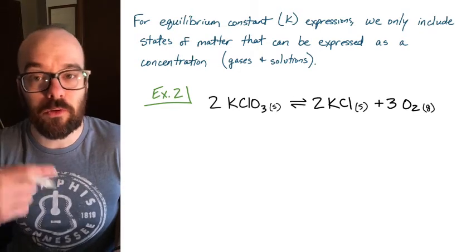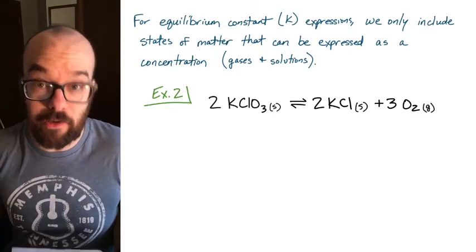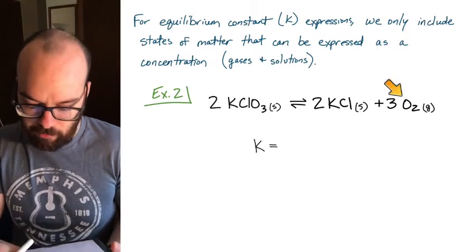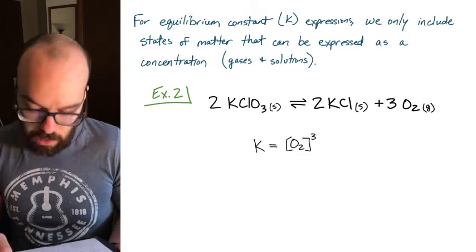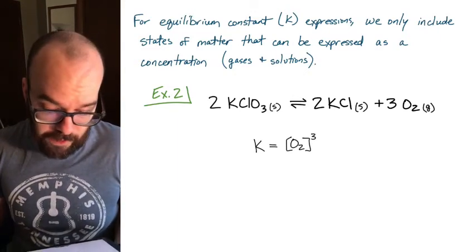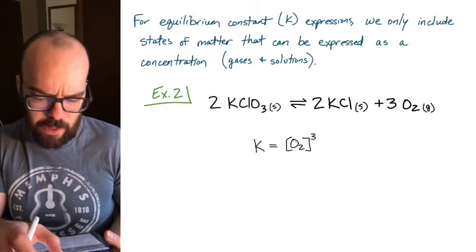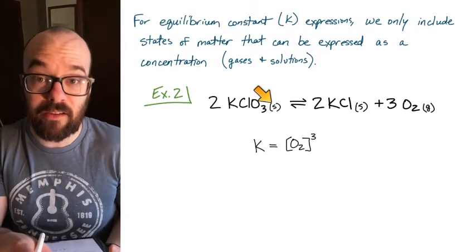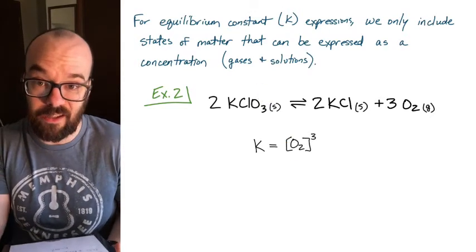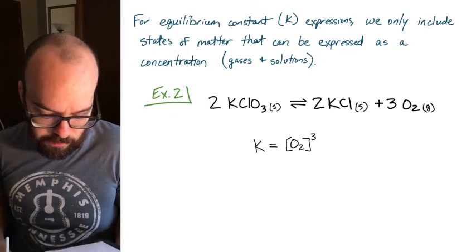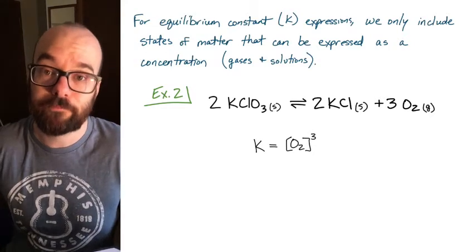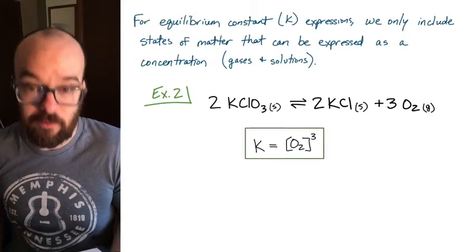We also won't include pure liquids, as we'll see in the next example. For this reaction, K equals the concentration of O₂ raised to the power of three. The KCl is a solid, so we don't include it. On the reactant side we only have a solid too, so there's nothing in the denominator — no division line needed. Our equilibrium expression is simply K equals the concentration of O₂ cubed.